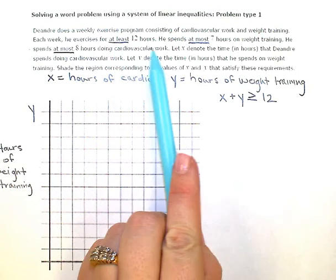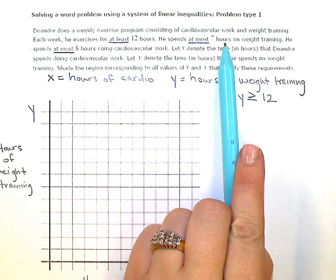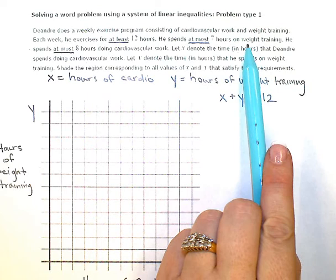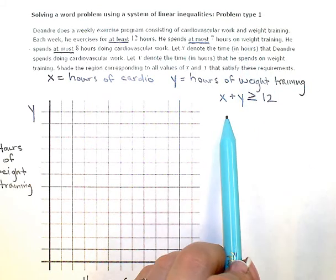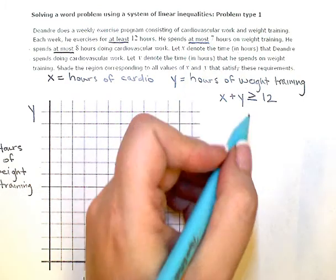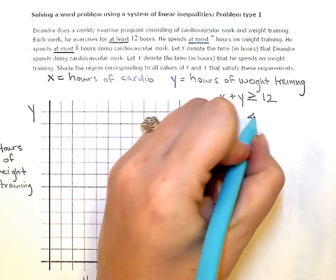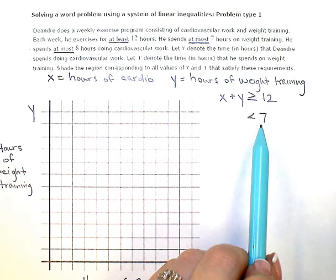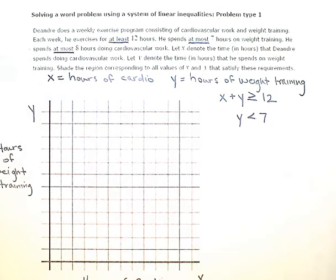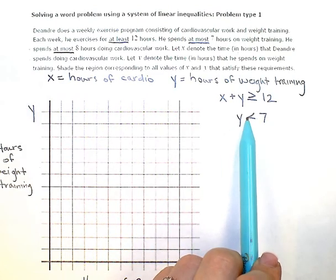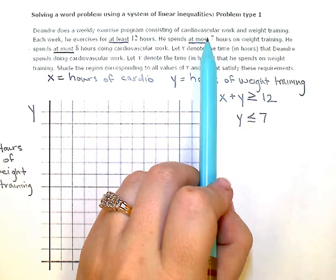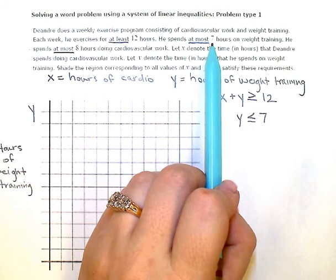Then he spends at most seven hours on weight training. So this one's going to deal just with Y because our information only refers to the weight training. So my second inequality here, the most he spends is seven hours. So seven is a maximum. It's going to go on the greater than side of my inequality here. And my variable for weight training is going to be less than that, less than seven. Could be equal to as well, right? We're okay if we spend exactly seven. We just can't go over. So Y is less than or equal to seven.